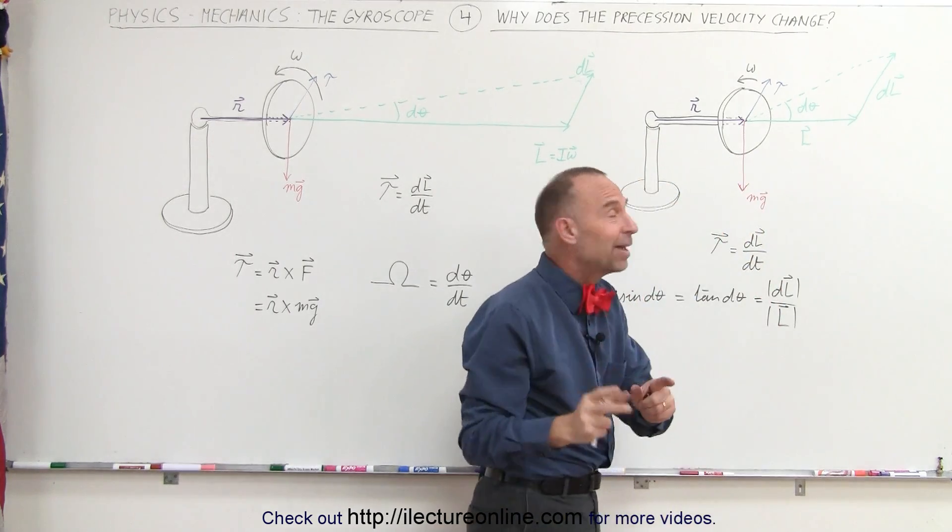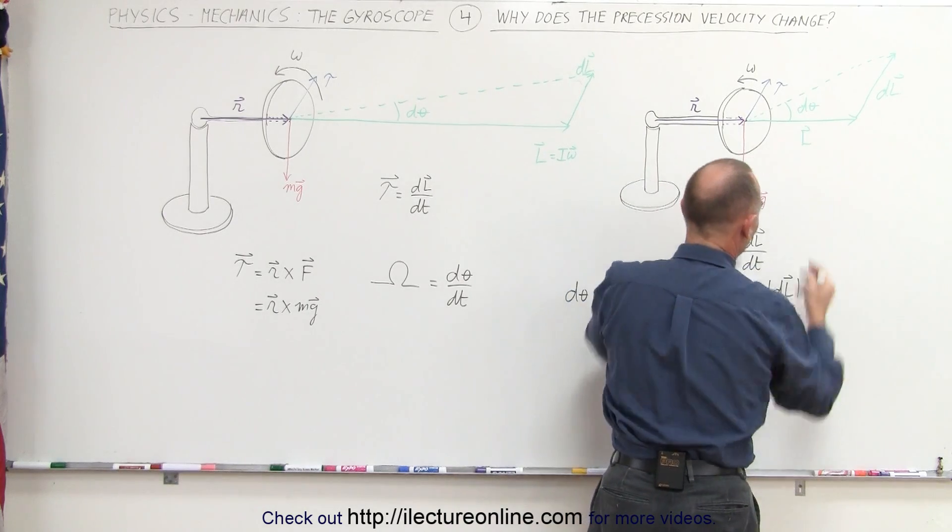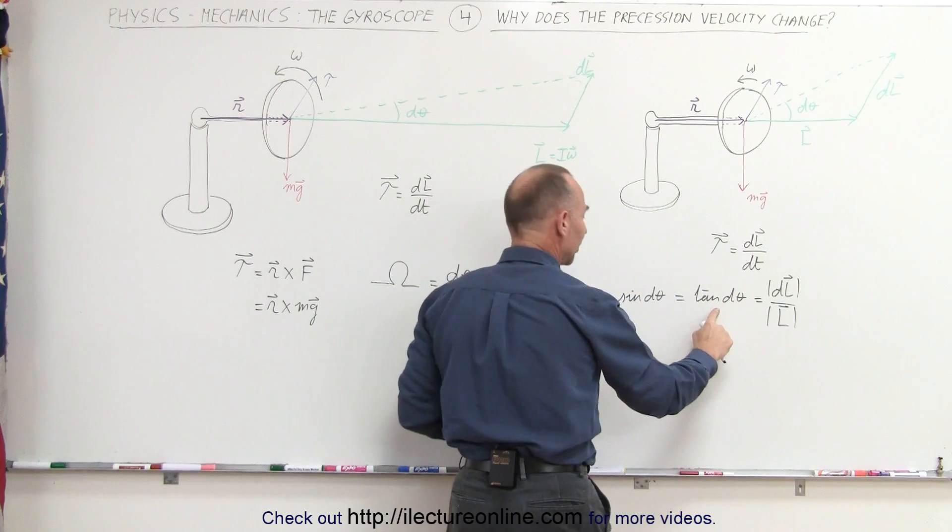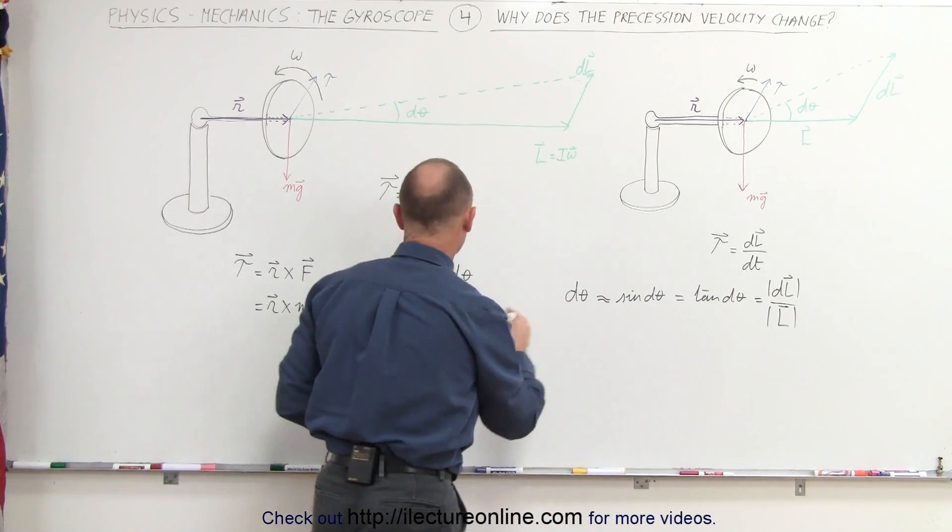Well, no, actually, dL remains constant, but L becomes smaller. As L becomes smaller, this ratio becomes larger, which means the precessional velocity becomes larger.